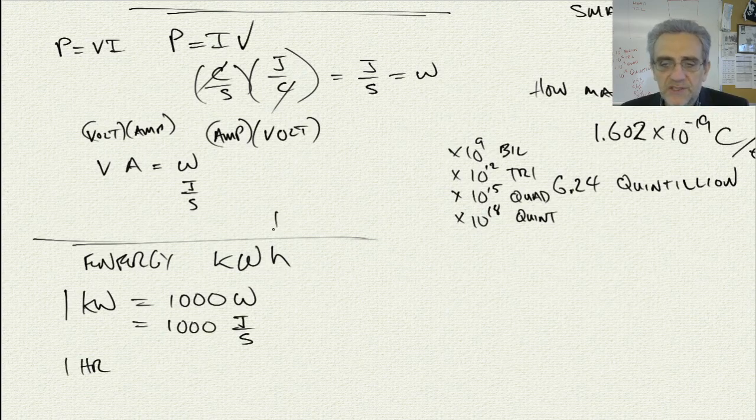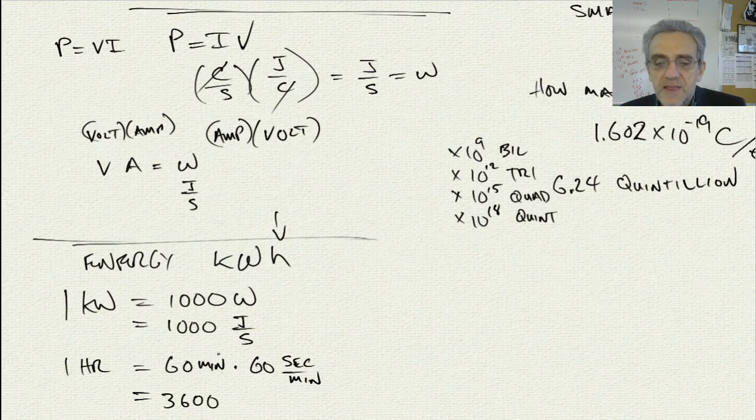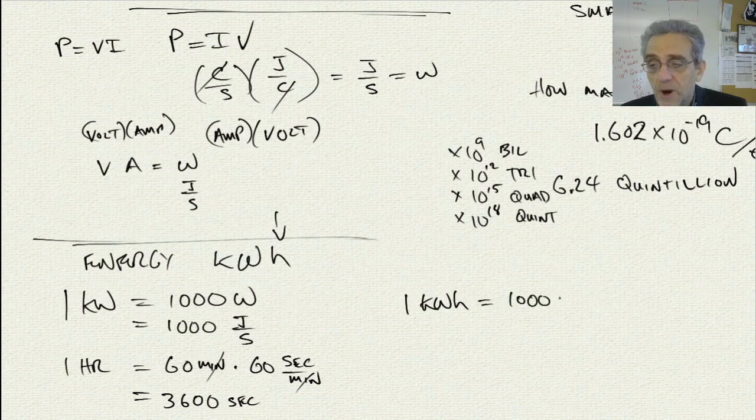Well, it's 60 minutes multiplied by 60 seconds per minute. 6 times 6 is 36, plus two zeros. And the minutes cancel out. And we get 3,600 seconds. So now we could say that 1 kilowatt hour is equal to 1,000 watts times 3,600 seconds.